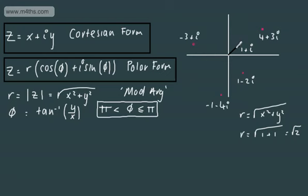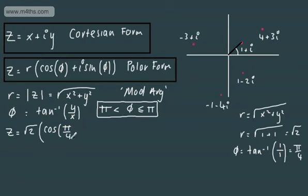If we consider the argument just here, the principal argument is the inverse tangent, tan to the negative 1. We can say theta is equal to tan to the negative 1 of 1 over 1, which of course is going to be pi by 4. We could write now the complex number in the form r cos theta plus i sine theta. We could say z is going to be equal to root 2 cos of pi by 4 plus i sine of pi by 4. And that now is in polar form.